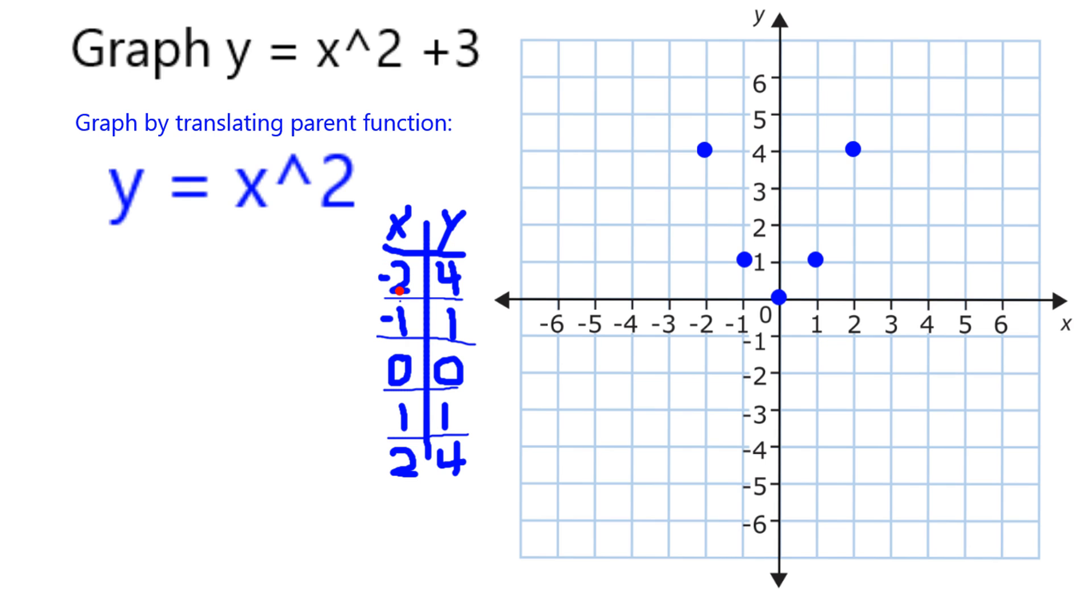So for example, when x is equal to negative 2 on the parent, y is equal to 4. So we should have a good picture of this basic, what's called a parabola shape, in our mind for any function which involves an x squared.